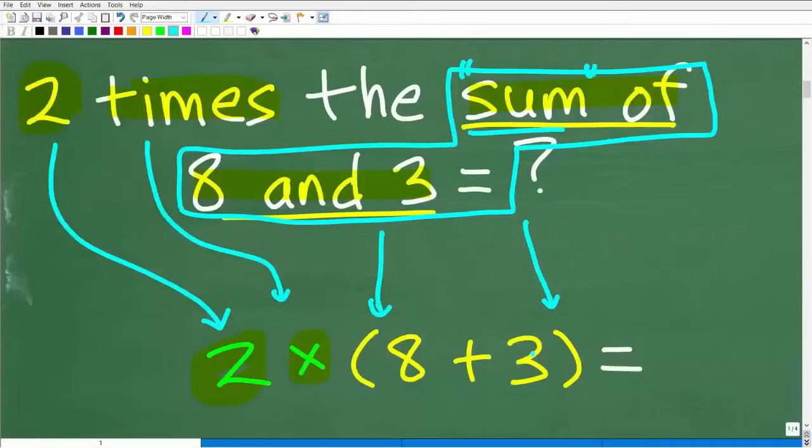This is very, very important. And if you don't understand this now, you're going to have a difficult time in algebra. I'm just telling you right now, anytime you see sum or difference, put that in parentheses. Put that in a group. So two times the sum of eight and three is going to be two times parentheses eight plus three.